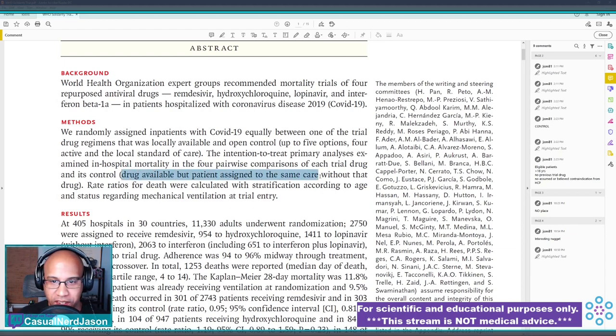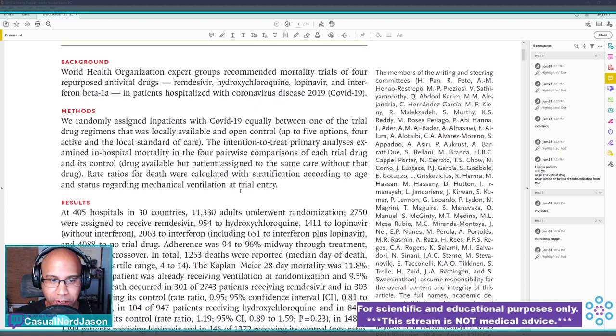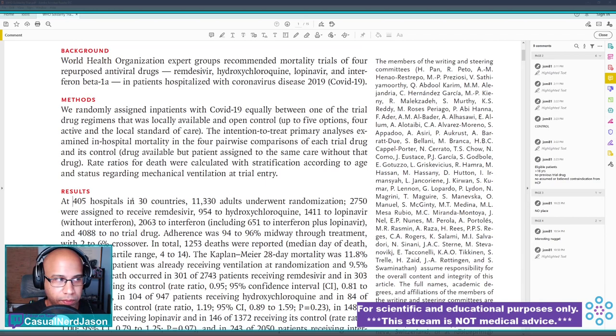The intention to treat primary analyses examined in-hospital mortality in the four pairwise comparisons of each trial drug and its controls. Usually in a drug trial, you will have a drug and a placebo. The placebo looks basically just like the drug and both the healthcare provider who's administering the drug and assessing the patient, as well as the patient, neither of them know which one is the drug or the placebo. The placebo effect is very real. You can see that in drug trials where people do better when they are in placebo than receiving nothing.